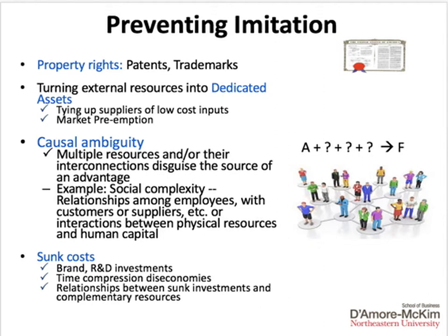In terms of preventing imitation, there are a couple of different ways we'll try to lock in resources and capabilities and protect them from being copied, and therefore protect our advantage. First, we'll use property rights — the legal system protects our intellectual property, our patents, and our trademarks that underlie our advantage, such as our brand. Second, we might try to turn external resources into assets that are dedicated to us. For example, we might tie up suppliers of certain inputs, or we might preempt our competitors and create first-mover advantage that locks other competitors out of the market.